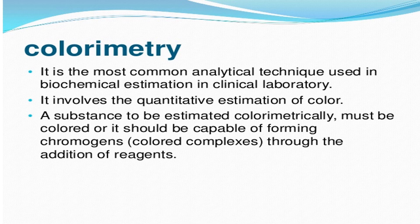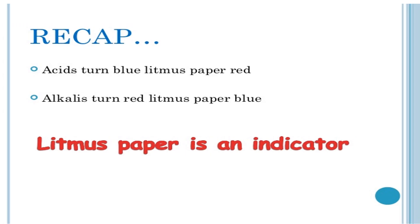A substance to be estimated colorimetrically must be colored, or it should be capable of forming a chromogen. The color complex — dark, blue, or red — is formed through the addition of a reagent. This method requires no complicated electronic instruments; it is a cheap and easy method. For example, acid turns blue litmus paper red, and alkali turns red litmus paper blue.